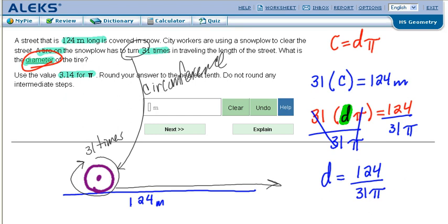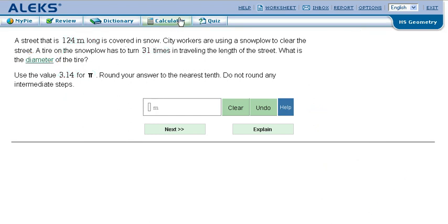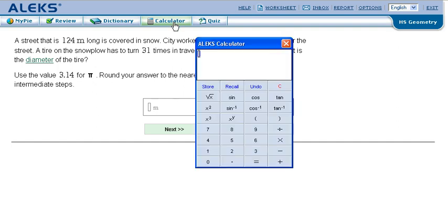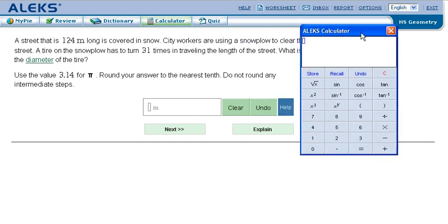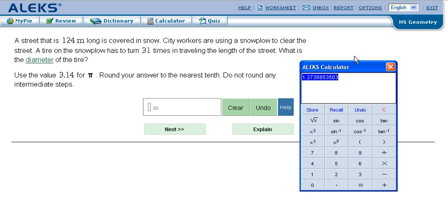We pick up our calculator. Round your answer to the nearest tenth. So again, 124 divided by 31 times 3.14, that's our d pi. And we get the diameter is 1.27. We're rounding to the nearest tenth, so that's 1.3 meters.